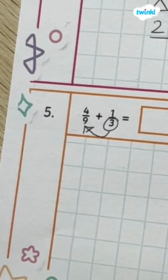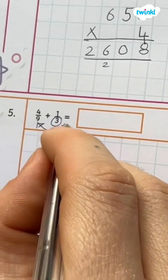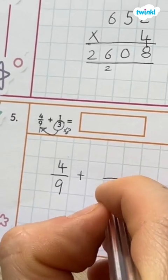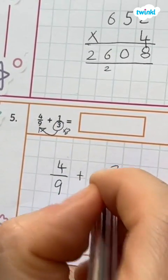Question 5: 4 ninths plus one third. The main thing here is to remember to make the denominators the same number. So we can do this by multiplying 3 by 3 which makes 9.